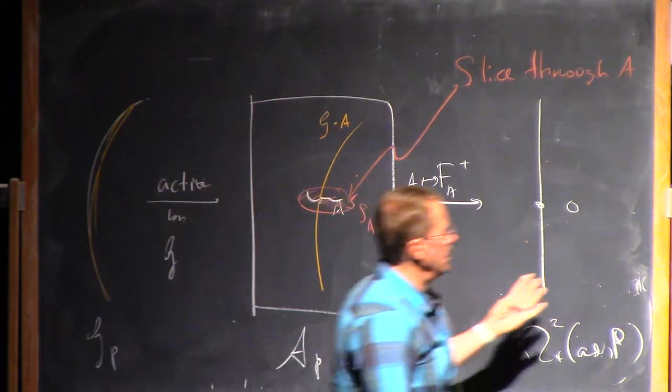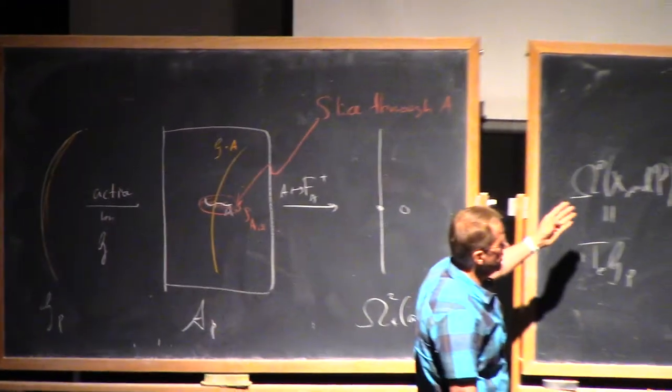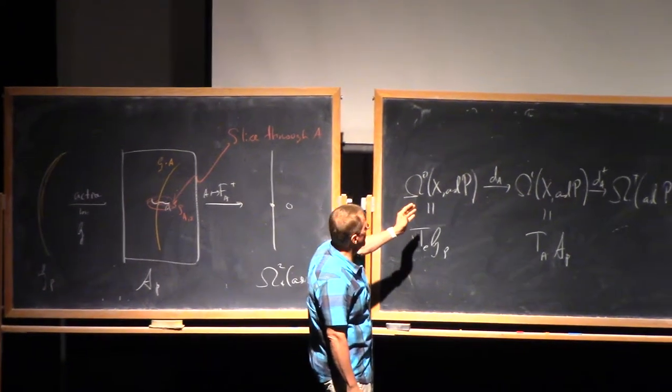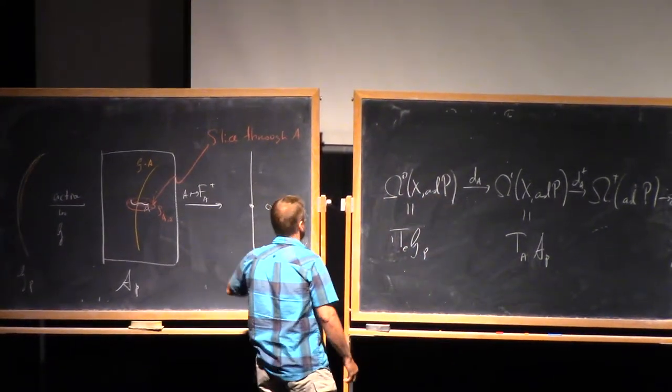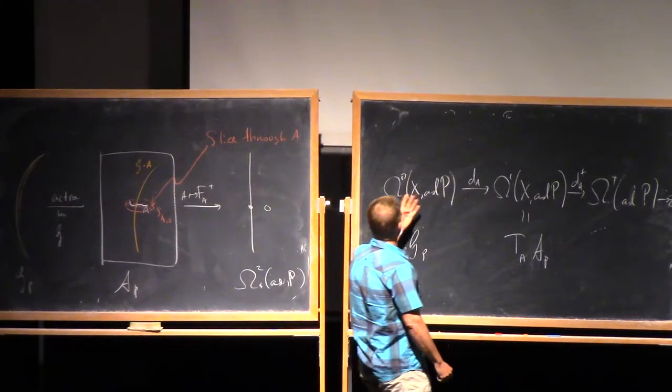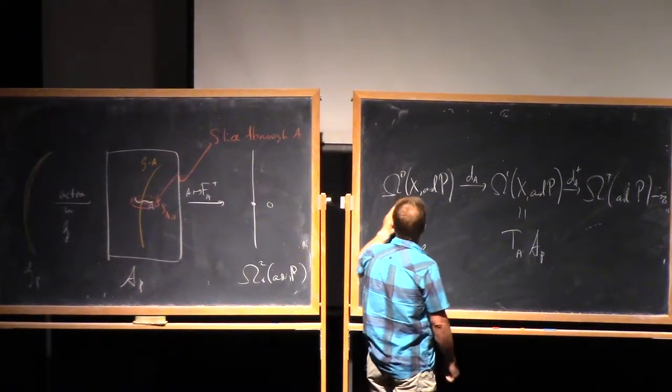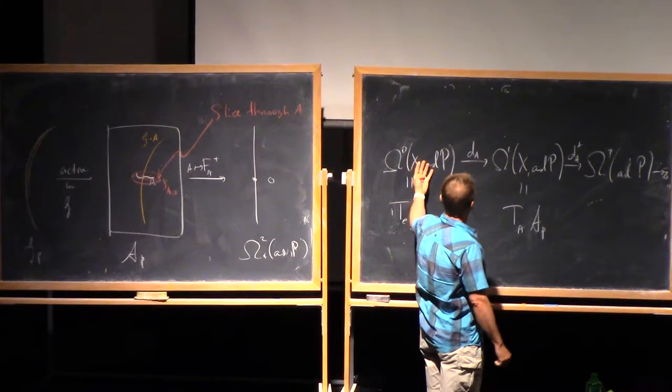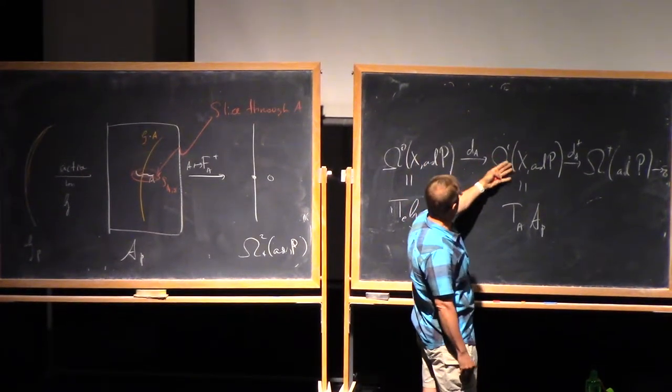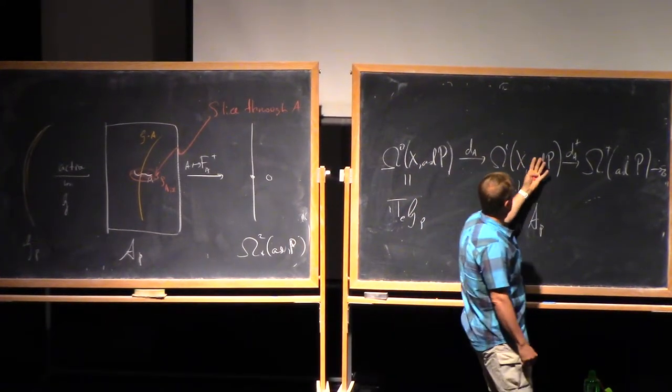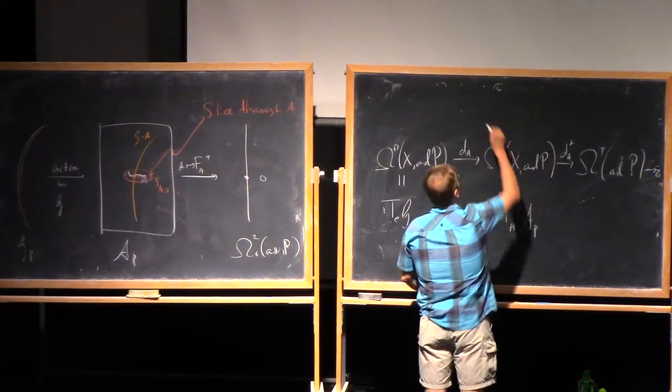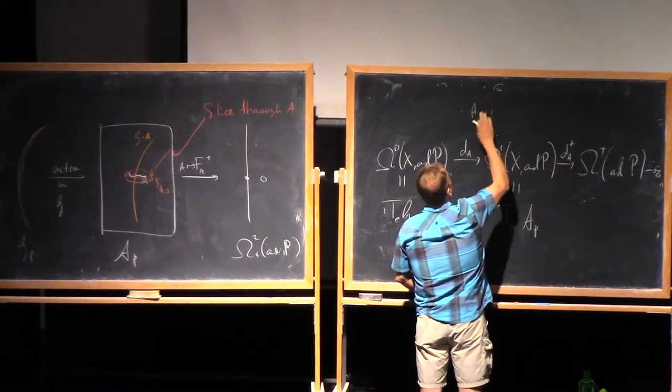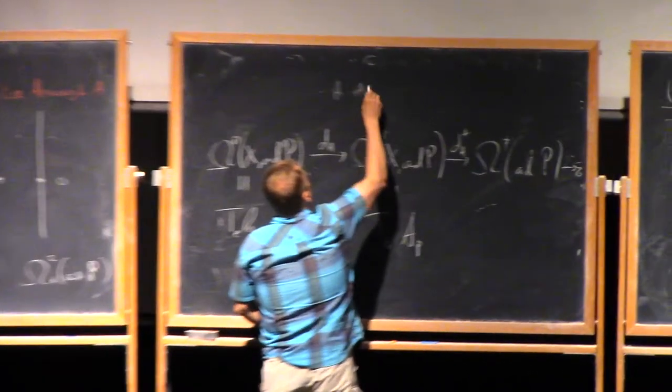It's a fundamental fact, which you saw a version of in the lectures on the first week, that if you linearize this picture, linearizing the gauge group action gives you the map that sends ad p-valued zero forms to one forms d_A. And then, linearizing the curvature equation gives you d plus.